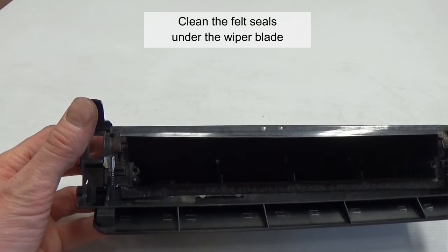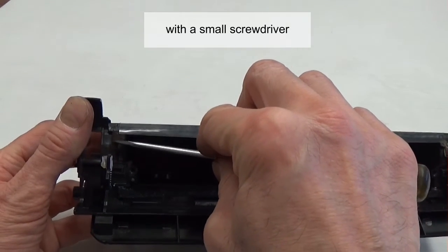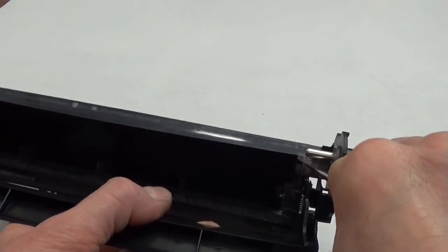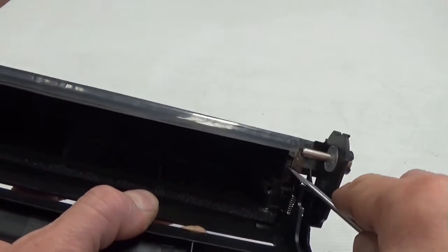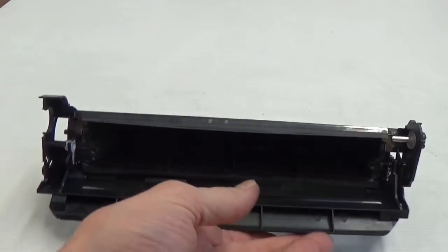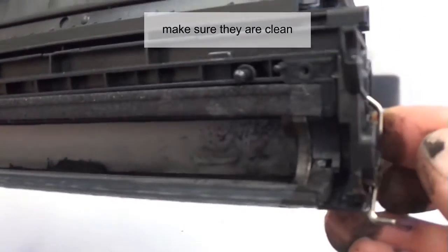Clean the felt seals under the wiper blade. If they are compressed, roughen them up with a small screwdriver. Note the magnetic seals. Make sure they are clean.